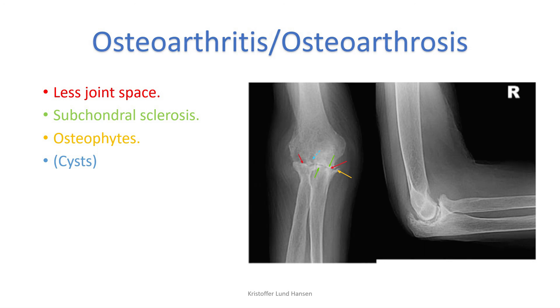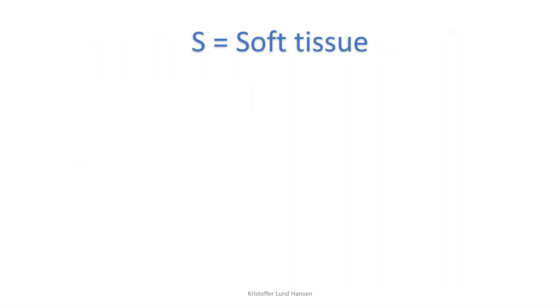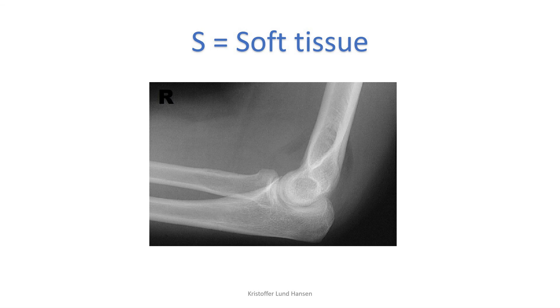The last point, S, stands for soft tissue. The main thing that we'll do here is to notice any swellings and effusions. There is especially one sign here that you should know of, called the sail sign. The sail sign suggests a fracture of one or more bones in the elbow area.